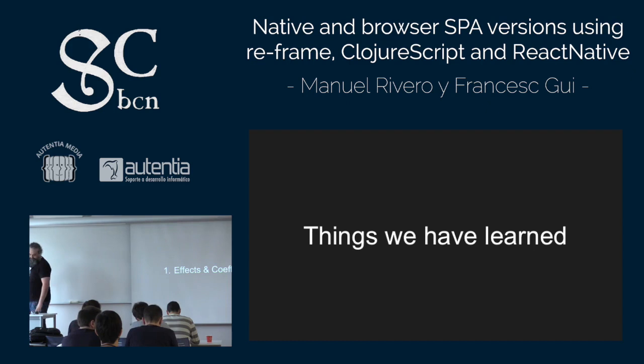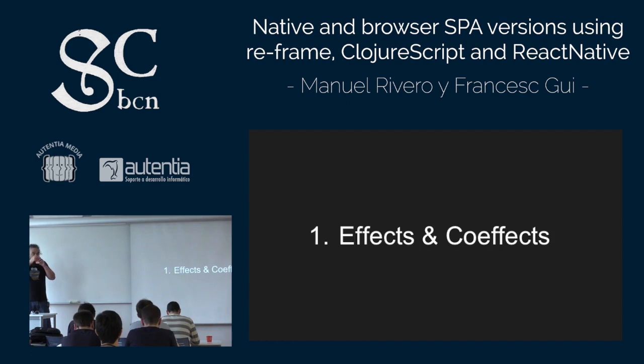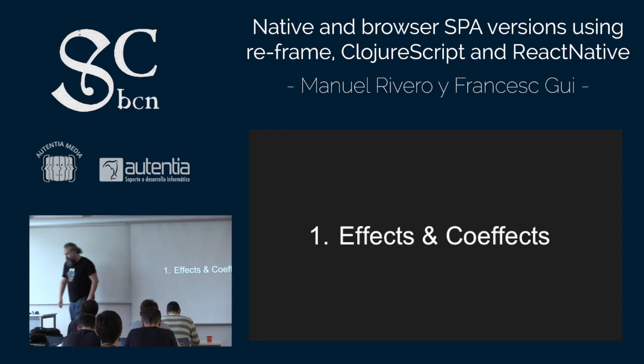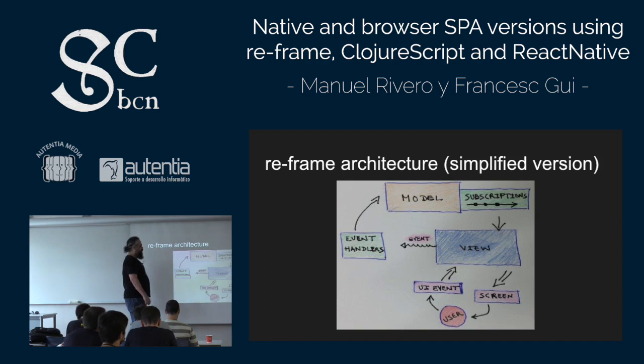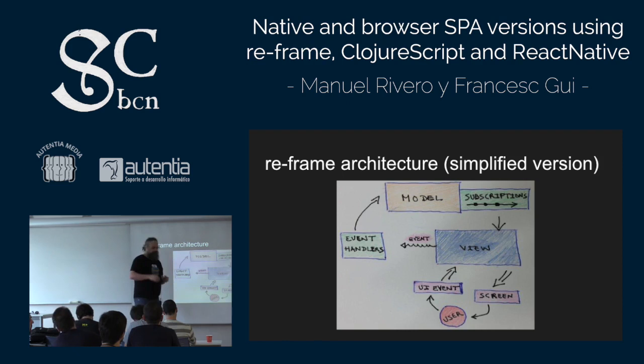The first thing is effects and co-effects — probably one of the most interesting things we learned last year, and I wanted to share it. First we need to see a bit of the Reframe architecture. I don't know if you have experience with Redux, but this architecture is very similar. You have a model which is an associative structure — all the state is in only one place. It's inspired by Elm.